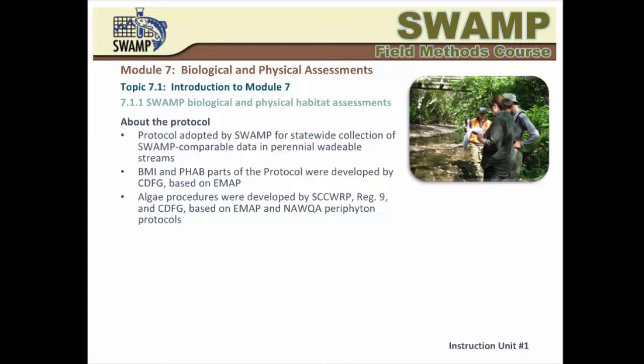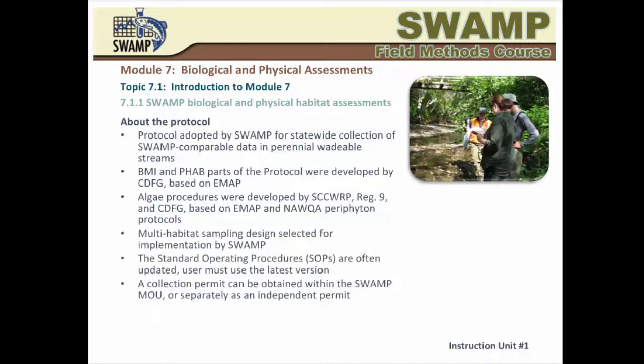CDFG examined two sampling designs during protocol development: the targeted riffle composite, or TRC, and the reach-wide benthos, or RWB, which employs a systematic sampling design. Both designs were included in the SWAMP SOP, and the RWB, or Multi-Habitat Protocol, was selected for statewide implementation in perennial, wadeable streams by SWAMP, based on experience analyzing many sets of data.